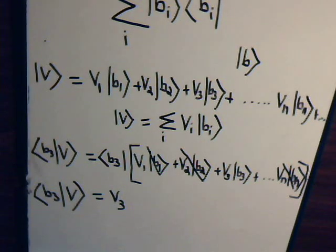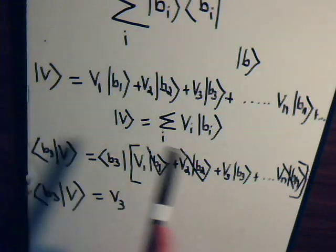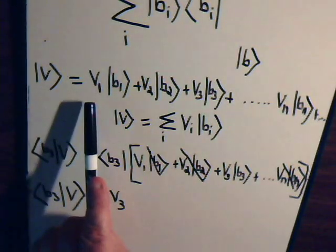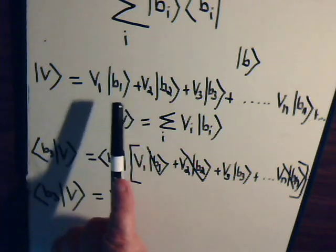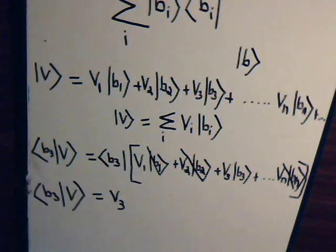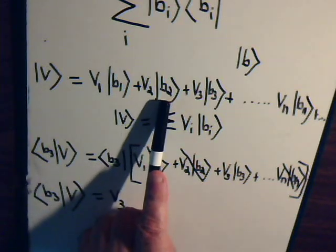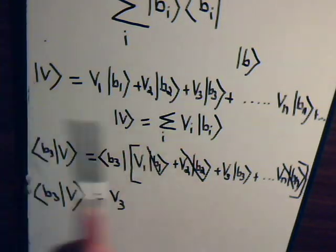So what this is telling us is here we're taking the ket vector and expanding it in terms of these basis vectors, and we said we have these various coefficients, each coefficient being different, being multiplied by a different basis vector. How can we determine what those coefficients are? Well, if you want to know what this one is, then just take the inner product of that basis vector with v.